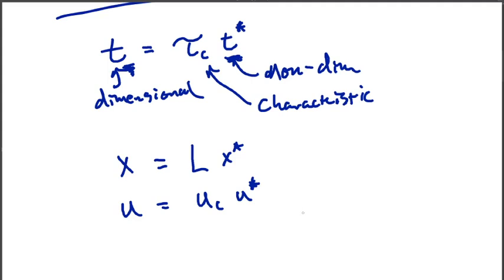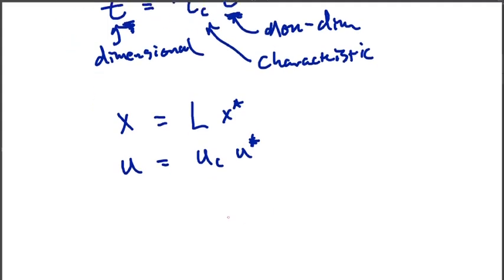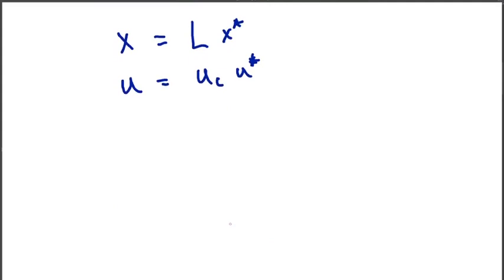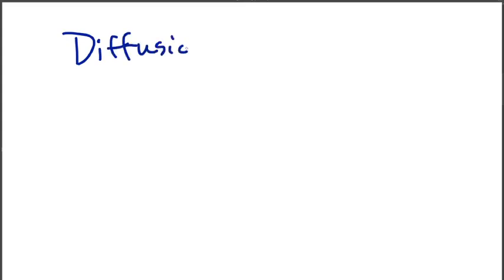So to illustrate this, we're going to start by considering a very simple system. We're going to consider the diffusion equation. So we can see how non-dimensionalization and scales work together.